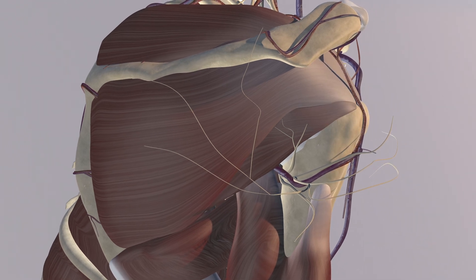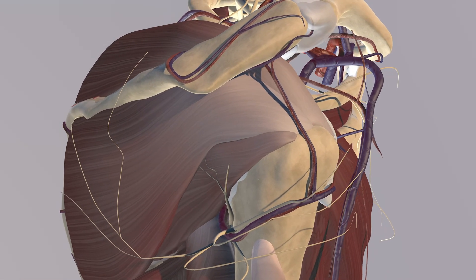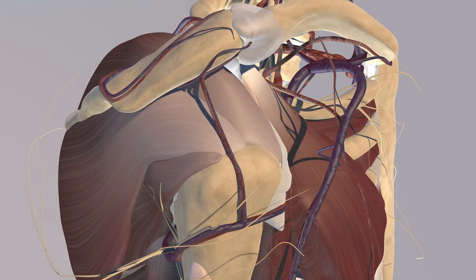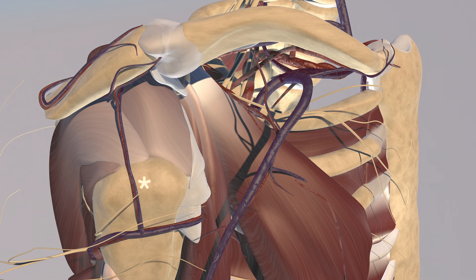You have the quadrangular space where the posterior humeral circumflex artery and axillary nerve run through. Now we're rotating back somewhat anteriorly. You can appreciate the lateral aspect of the shoulder — the subdeltoid bursa is removed and you can appreciate the supraspinatus tendon, infraspinatus tendon, and teres minor tendons attaching onto the greater tuberosity.